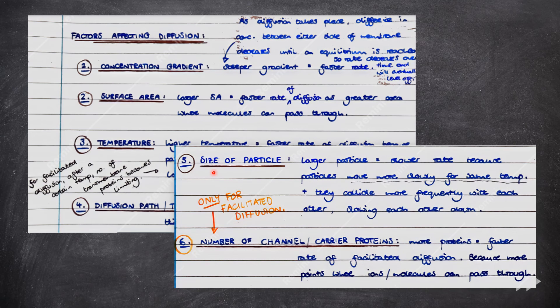Next, we have the size of the particle. The larger the particle, the slower the rate of diffusion, because the particles move more slowly for the same temperature, and they collide more frequently with each other, slowing each other down.